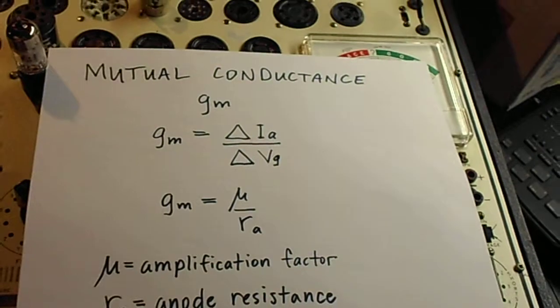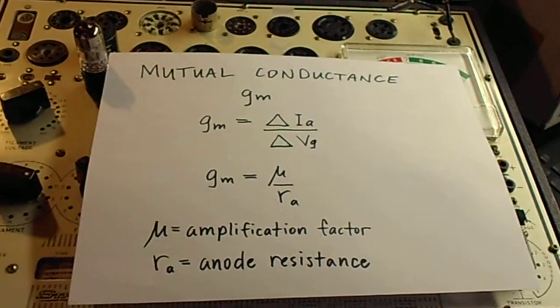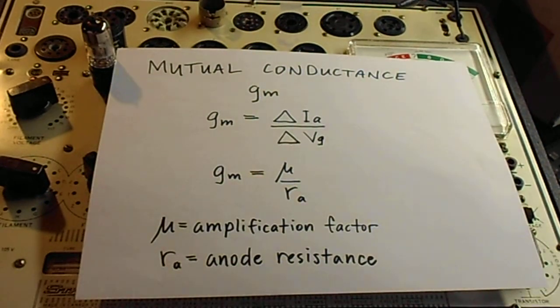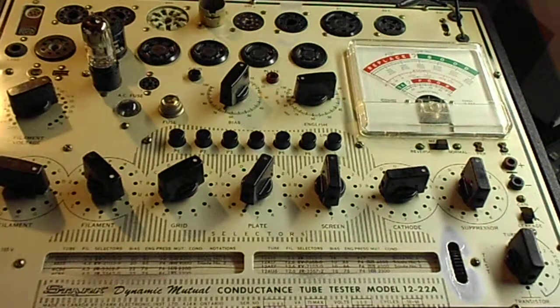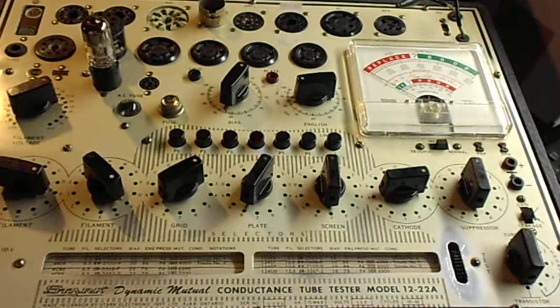And when you're measuring the same tube but just how it changes over time, the anode resistance stays roughly the same. So one can make the correlation that mutual conductance is directly related to the amplification factor of the tube. So as the mutual conductance goes down, I believe so does the effectiveness of the tube and the job it was intended to do.